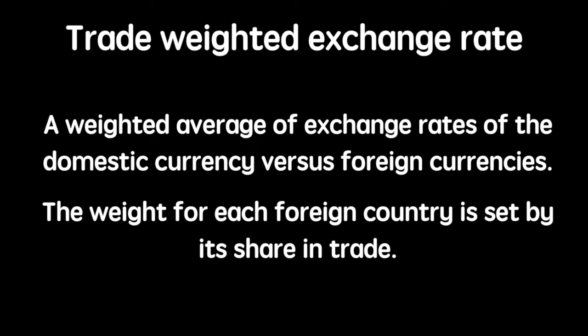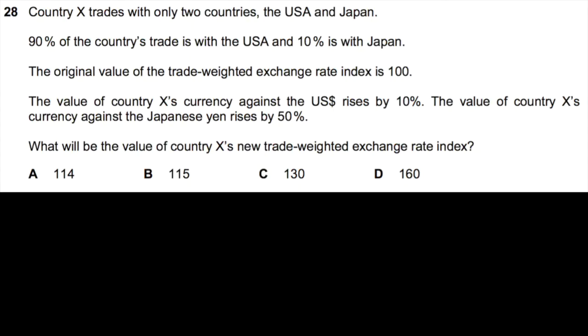The trade-weighted exchange rate is a weighted average of exchange rates of the domestic currency versus foreign currencies, where the weight for each foreign country is set by its share in trade. To illustrate, let's look at a past multiple choice question from the CIE winter 2013 paper. Country X trades with only two countries — the USA and Japan. 90% of the country's trade is with the USA and 10% is with Japan. The original value of the trade-weighted exchange rate index is 100. Country X's currency against the US dollar rises by 10%, and against the Japanese yen rises by 50%.